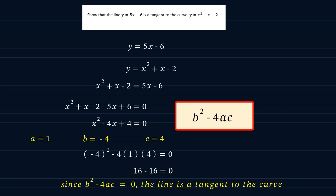And that's proof that the line y is equal to 5x minus 6 is truly a tangent to the curve, y is equal to x squared plus x minus 2.